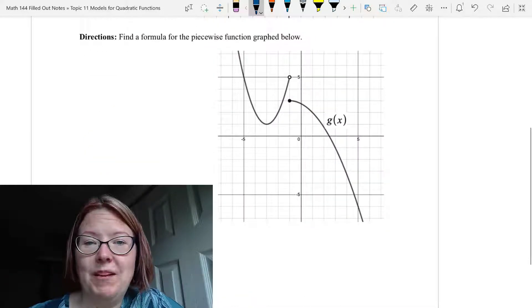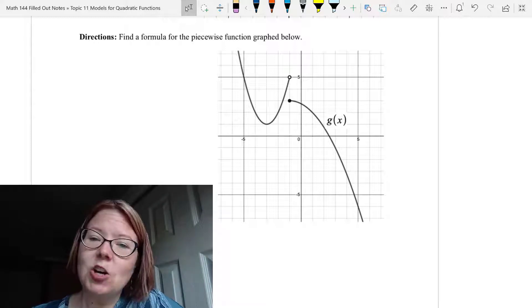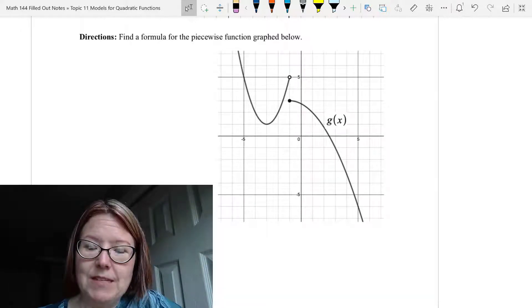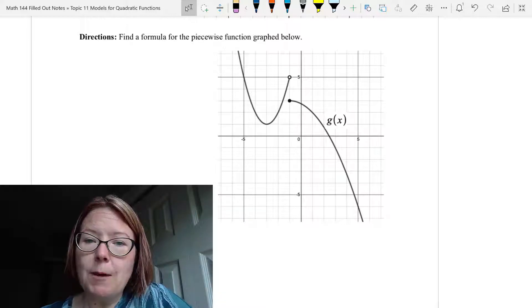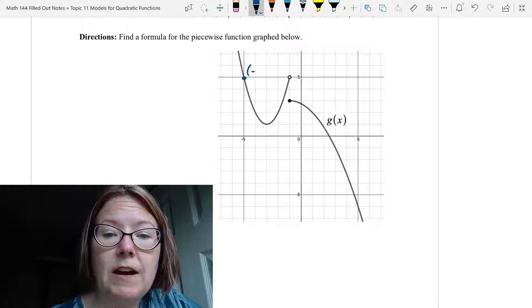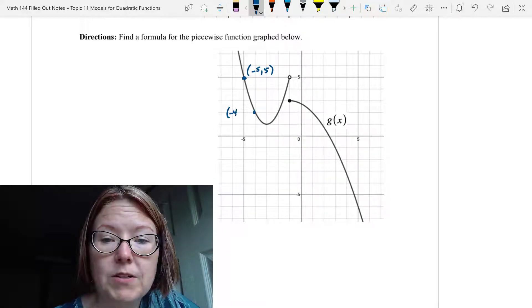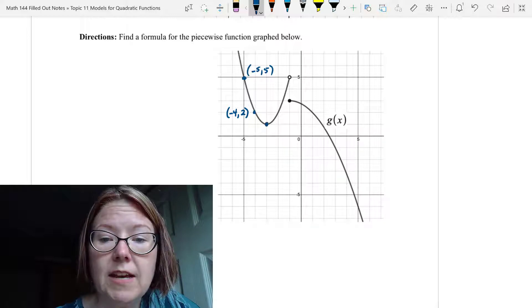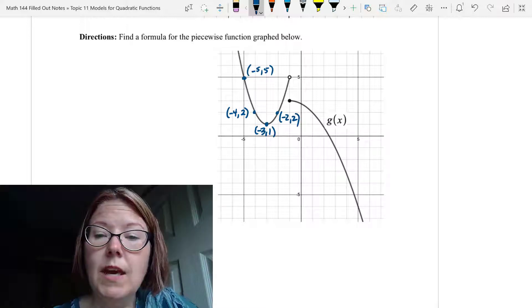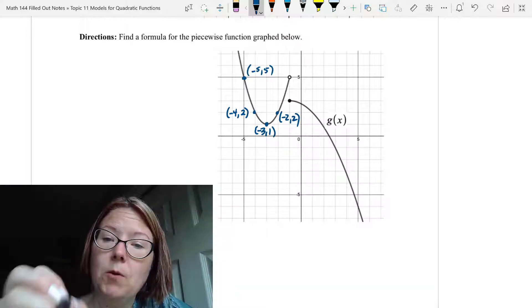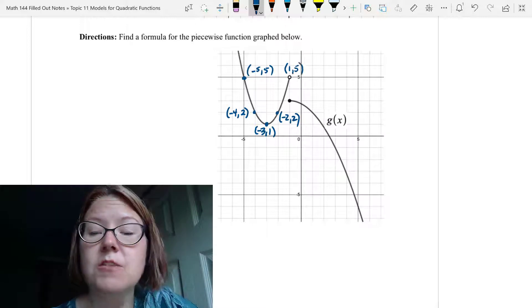Now I'd like you to find a formula for the piecewise function that's graphed below. I'm going to start by describing the two graphs. They're both clearly pieces of parabolas. The first parabola opens up. It has a point at (-5, 5), another point at (-4, 2), the vertex is at (-3, 1), another point at (-2, 2), and it goes up to an open point at (-1, 5) but doesn't reach that point. We'll call that Q1 for quadratic 1.